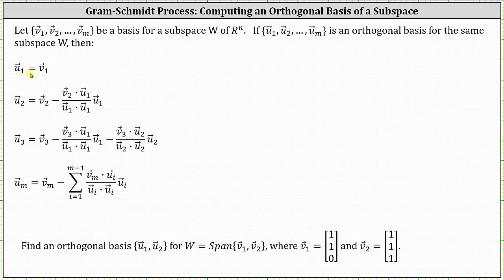Notice vector U sub one is equal to vector V sub one. Vector U sub two is equal to vector V sub two minus a scalar multiple of vector U sub one, where the scalar is a quotient of these dot products. Vector U sub three is equal to vector V sub three minus a scalar multiple of vector U sub one minus a scalar multiple of vector U sub two, where these scalars are the quotients of the dot products given, and the pattern continues.